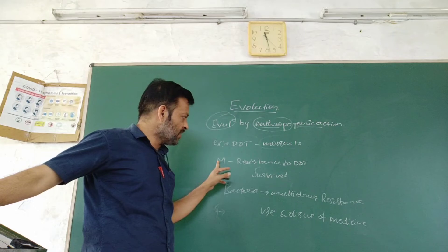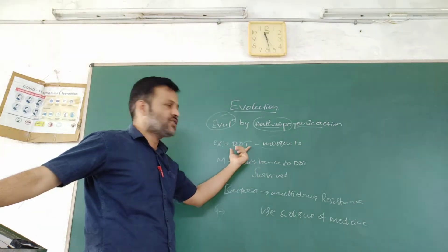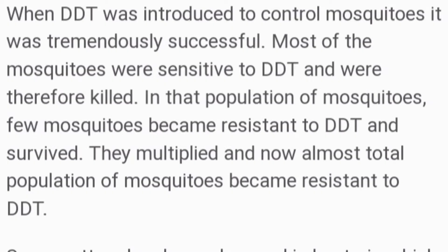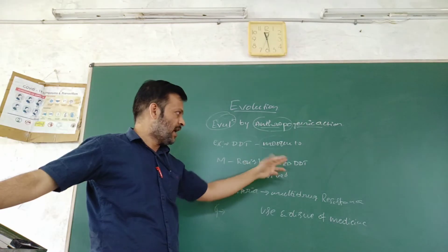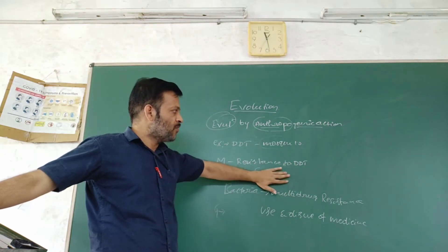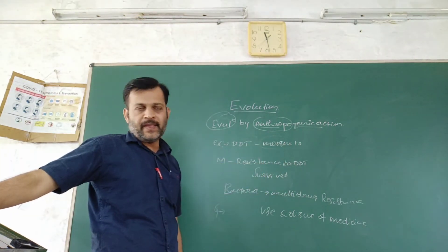Mosquitoes have resistance power against DDT. DDT will not work on them. As a result, they develop resistance against the DDT and the mosquitoes survive.